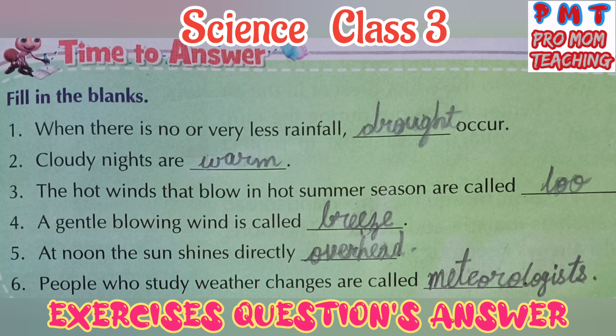Four, a gentle blowing wind is called breeze. Five, at noon the sun shines directly overhead. Six, people who study weather changes are called meteorologists.